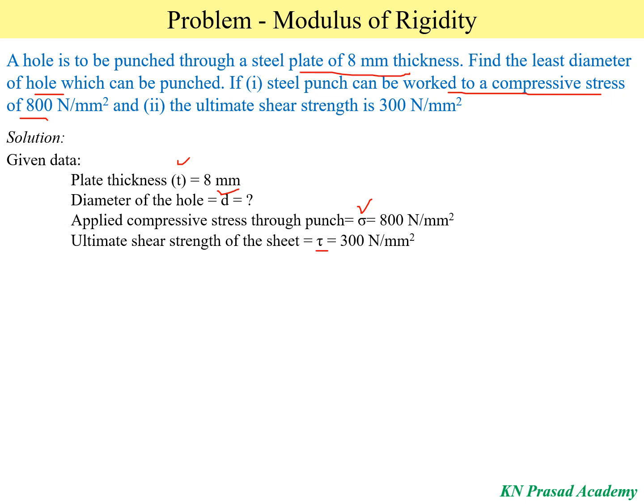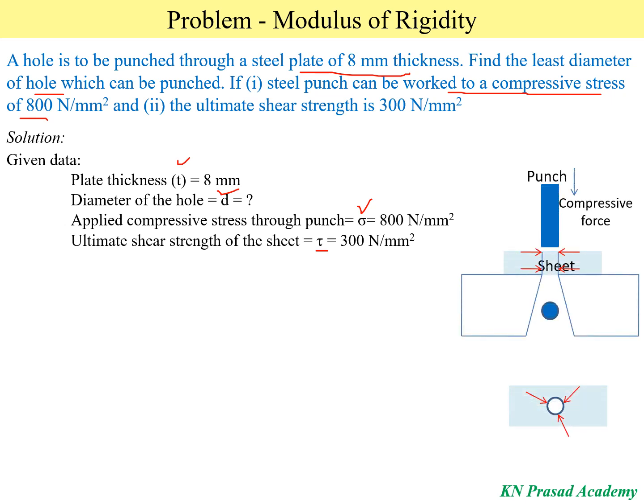Before solving this problem, we first have to understand the punching operation. In the diagram, we observe that the sheet is kept in between the punch and die, and we are applying compressive forces through the punch on the sheet. The sheet then undergoes deformation between the punch and die, and shearing occurs inside the sheet until it separates.